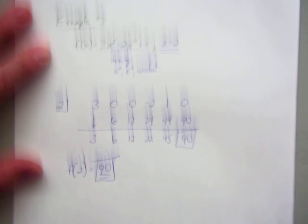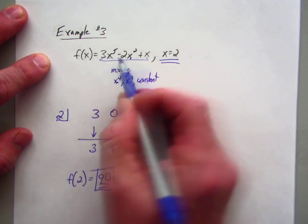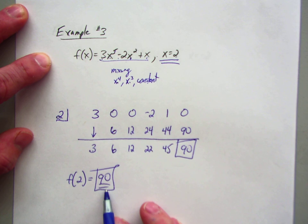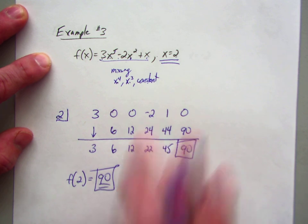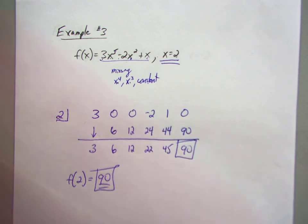So f of 2 is equal to 90. So there's my value. In other words, if I plug 2 in for x here and take it to the 5th power times 3, and blah, blah, blah, using direct substitution, you're going to get 90. So synthetic substitution is a lot easier than direct substitution. Oh my gosh. Thank you.